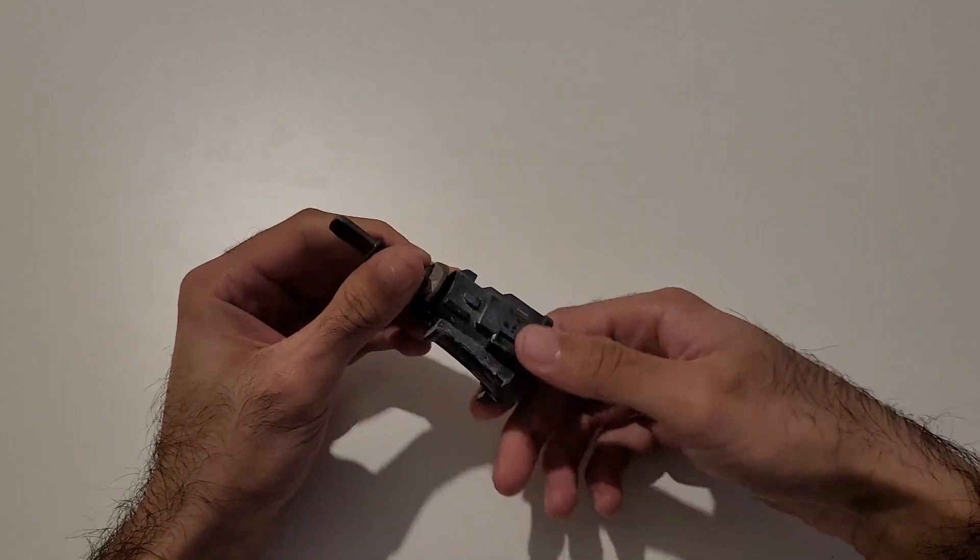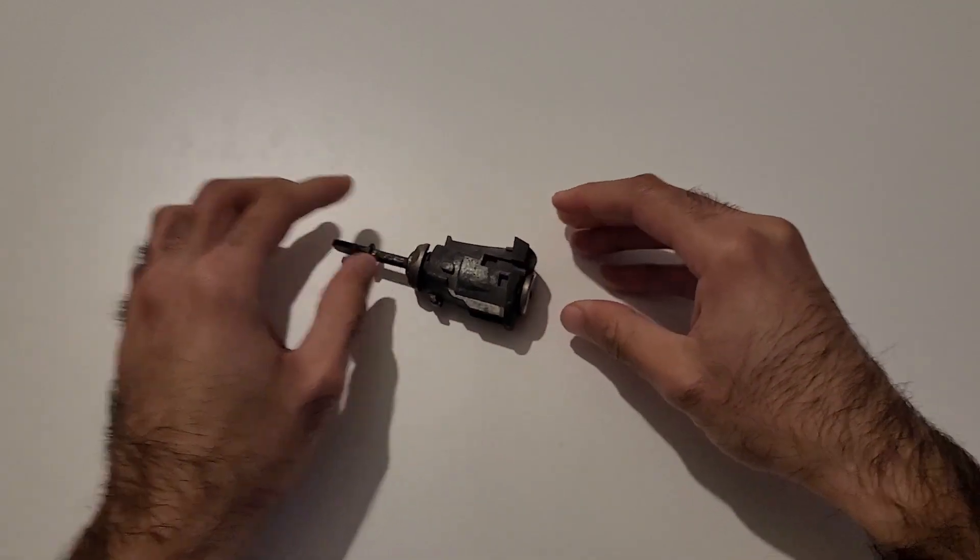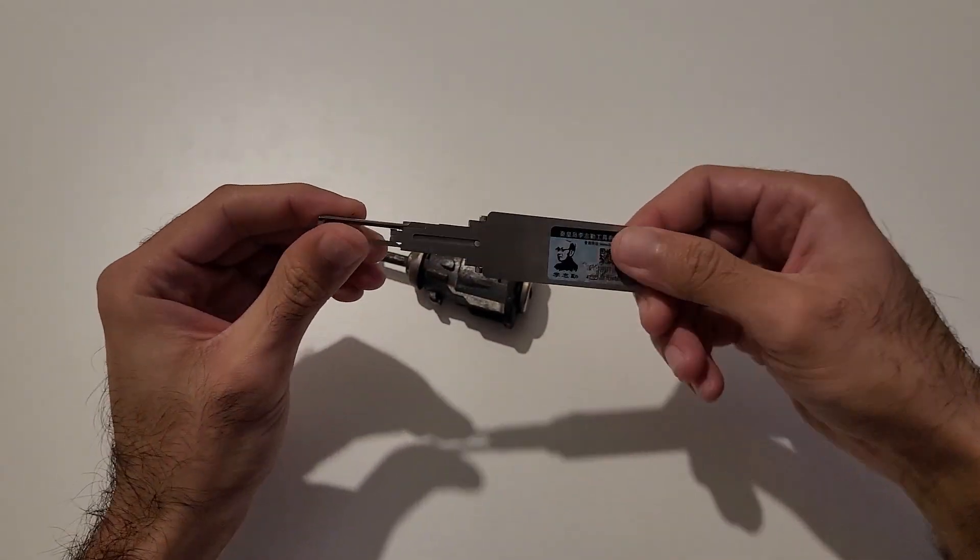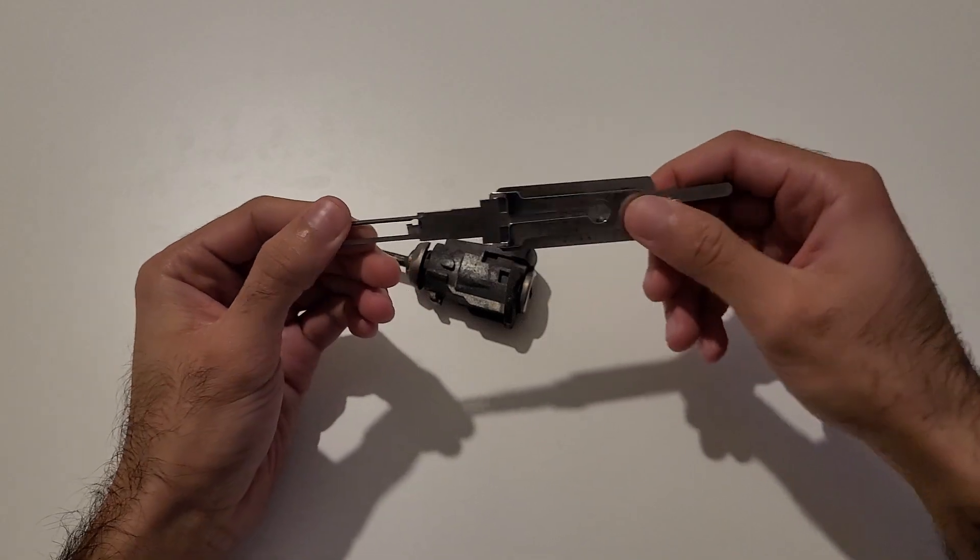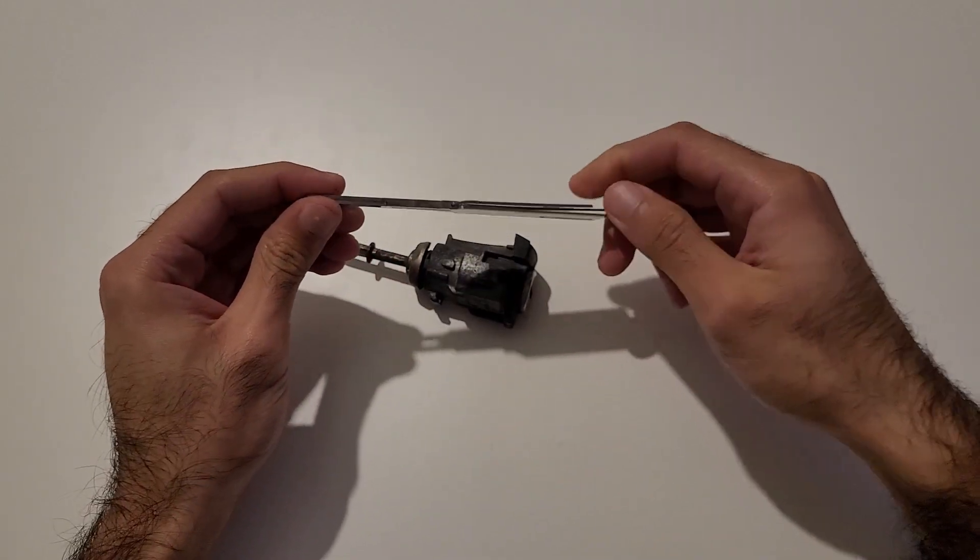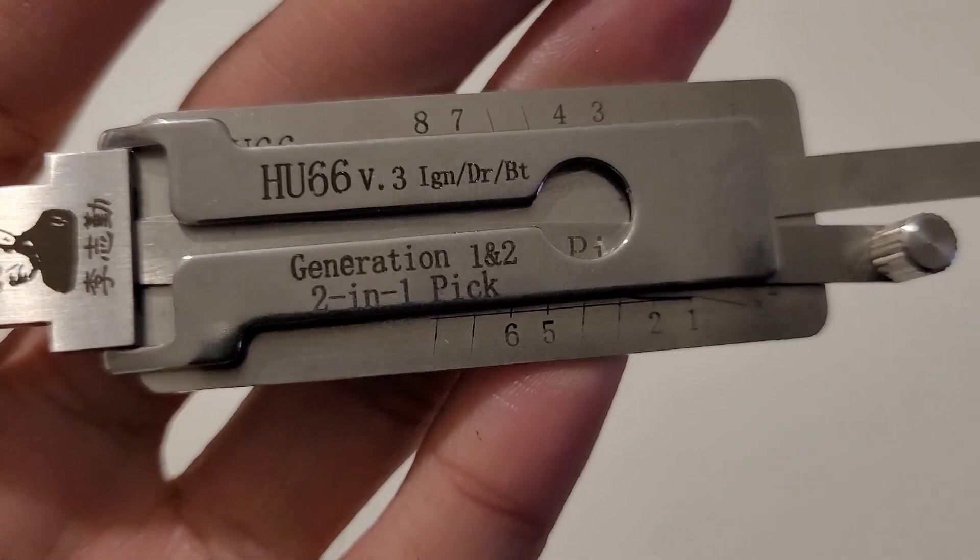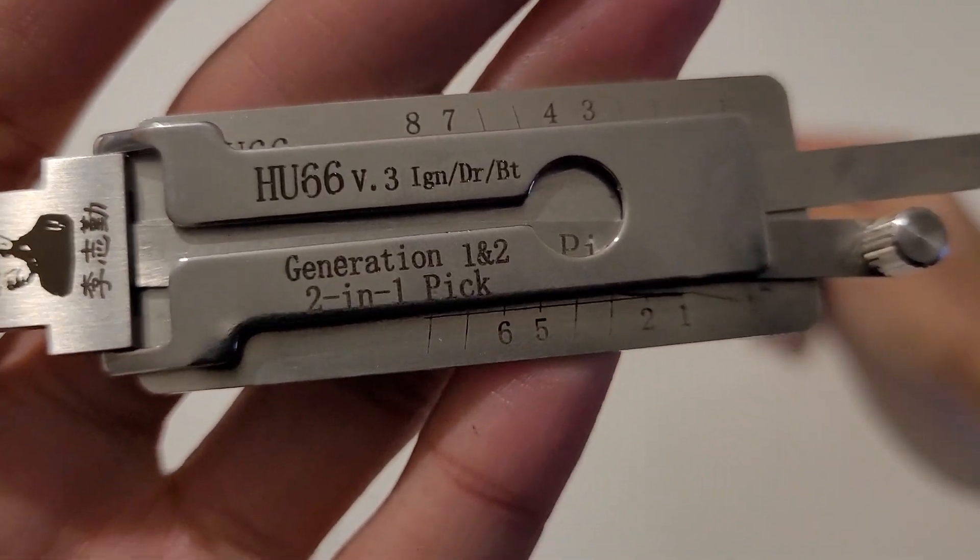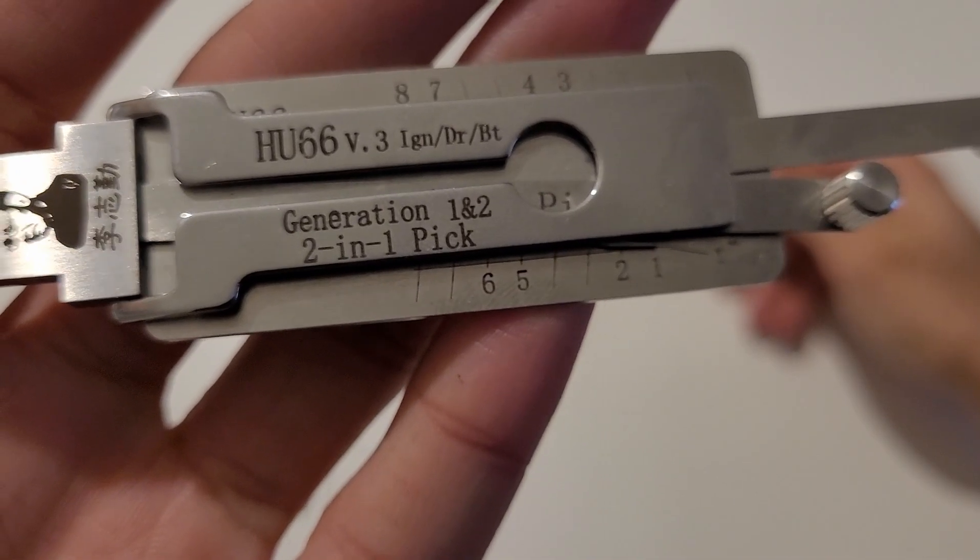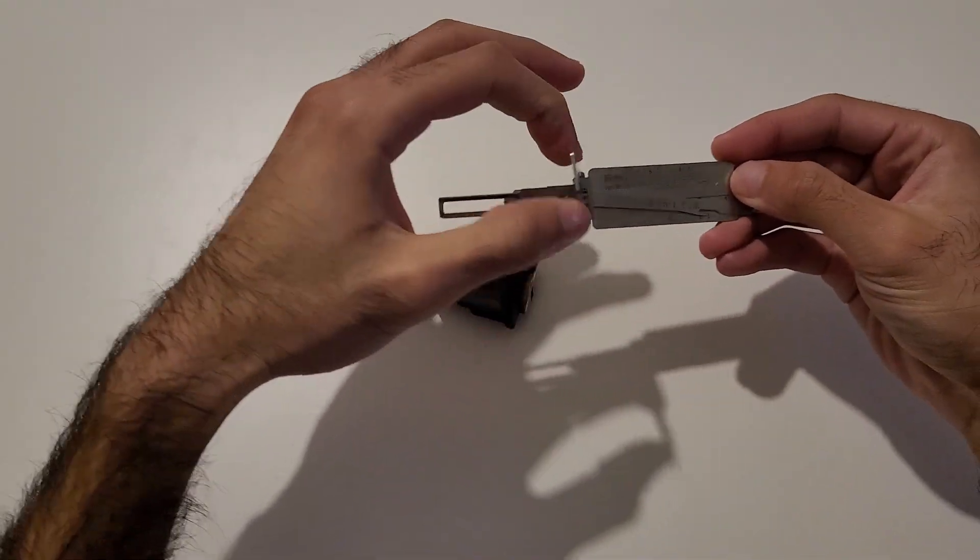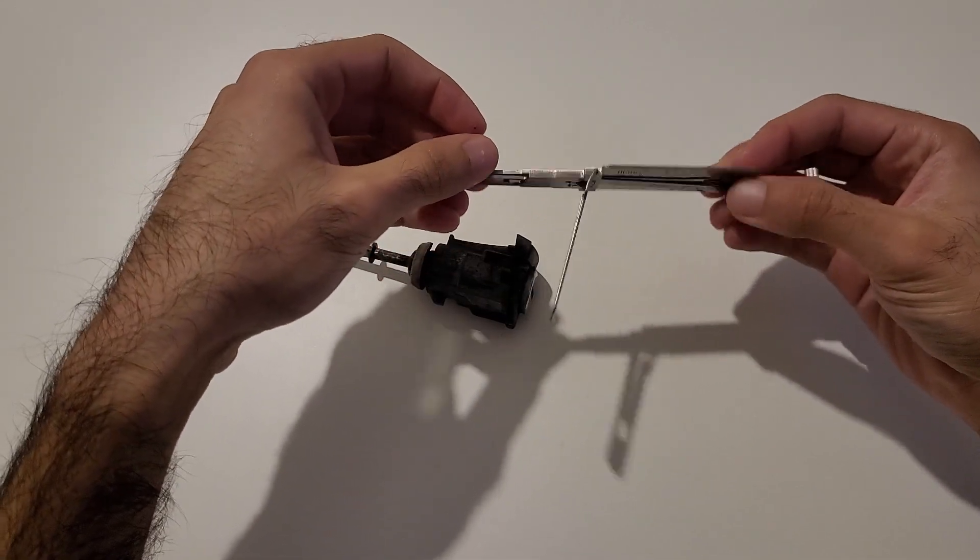On to the picking side of it, I will be using a Lishi tool. These are readily available online, they make them for all types of cars, and this particular one is the HU66 version 3, the 2-in-1 pick. It's a 2-in-1 because it can both pick and decode your lock.